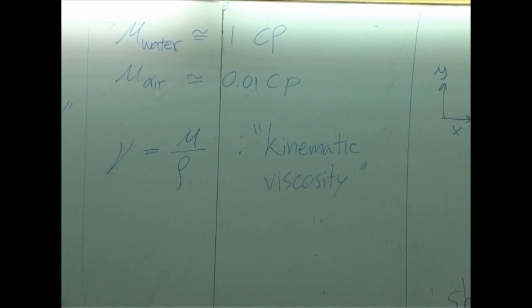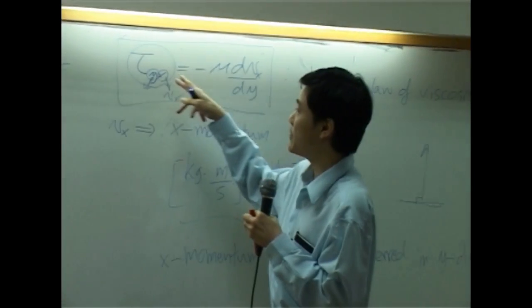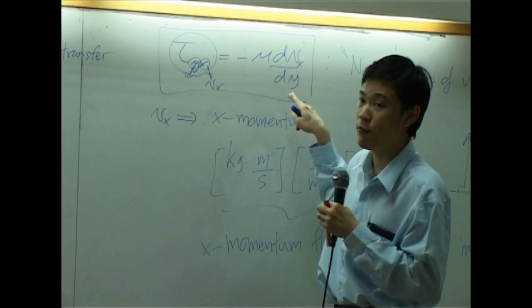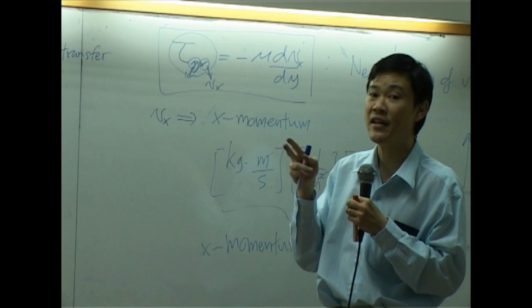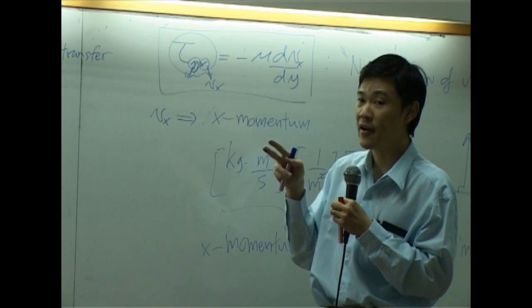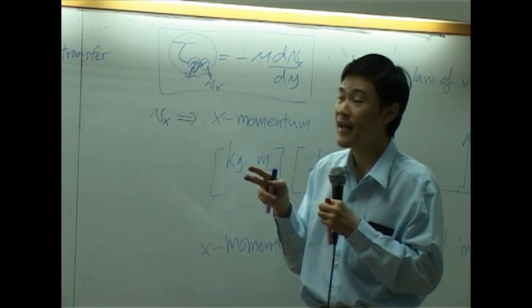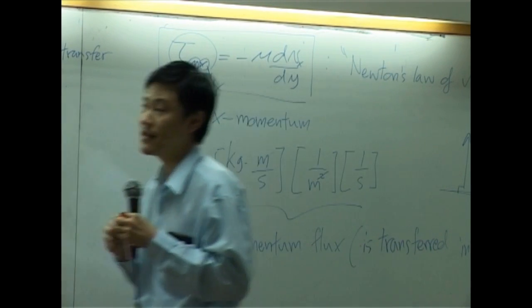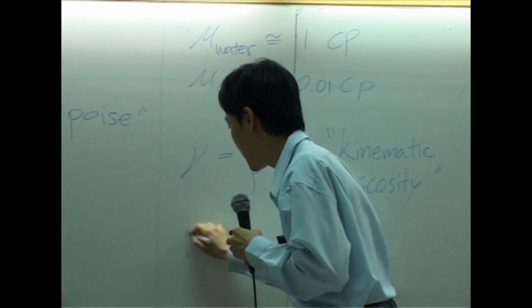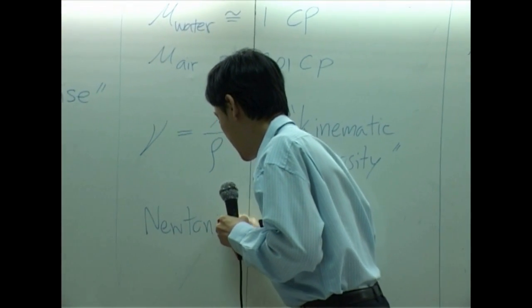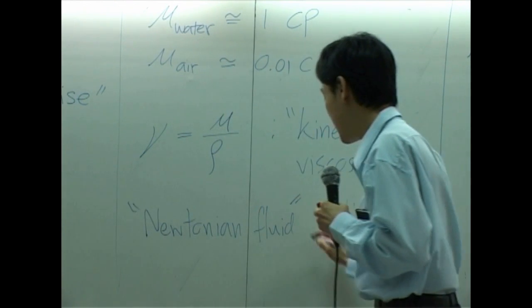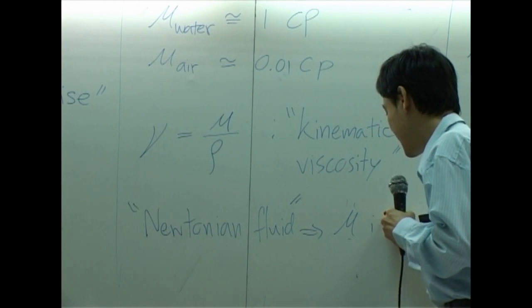If the viscosity is constant at some certain temperature, when you plot between tau and dvx by dy, you should get a linear, right? The linear there means the viscosity is constant. Any fluid with constant viscosity is called Newtonian fluid.